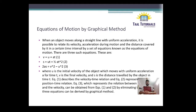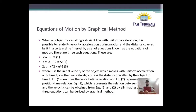When an object moves along a straight line with uniform acceleration, it is possible to relate its velocity, acceleration during motion, and the distance covered by it in a certain time interval by a set of equations known as equations of motion. So basically there are three types of equations.